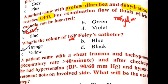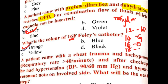For Foley's catheter sizing and color coding, remember at least 12, 14, 16, and 18. A memory aid is 'W-G-O-R': 12 Fr is white, 14 Fr is green, 16 Fr is orange, and 18 Fr is red.